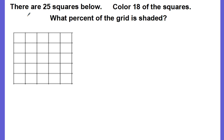Okay, here's another example. Same thing, there are 25 squares. This time we want to color 18 of them. So I've shaded 18. Is it 18 out of 100 squares? No, it's only 18 out of 25 squares. So we could go and we could keep duplicating our groups or copying our groups until we have 100 total squares.